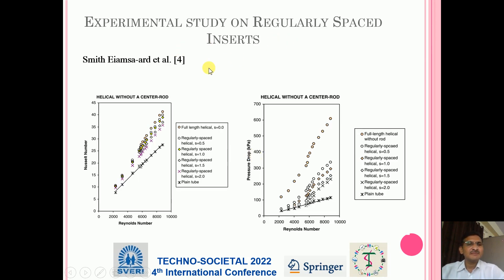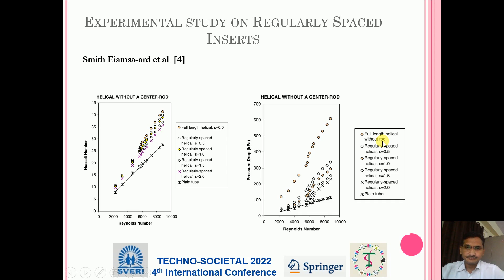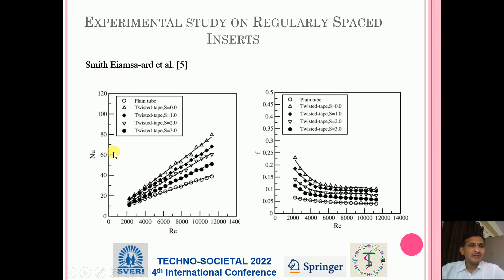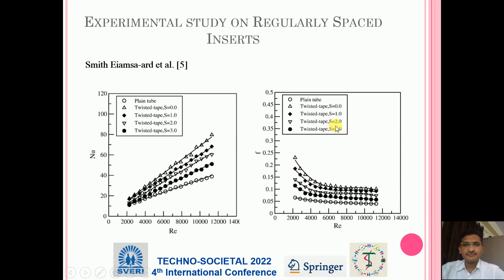Going to the experimental work — Smith Imshad plotted a graph of Reynolds number versus Nusselt number. It was found that as the Reynolds number increases, the Nusselt number increases, and the Nusselt number is maximum for the full length helical. In another graph, Reynolds number versus pressure drop is plotted, and pressure drop is very high for the full length helical without rod; as Reynolds number increases, pressure drop also increases. In another study, a graph of Reynolds number versus Nusselt number shows the highest Nusselt number for the twisted tip with space ratio of 2. Reynolds number versus friction factor shows friction factor drops as Reynolds number increases, with the highest friction factor for twisted tip with space ratio of 2.